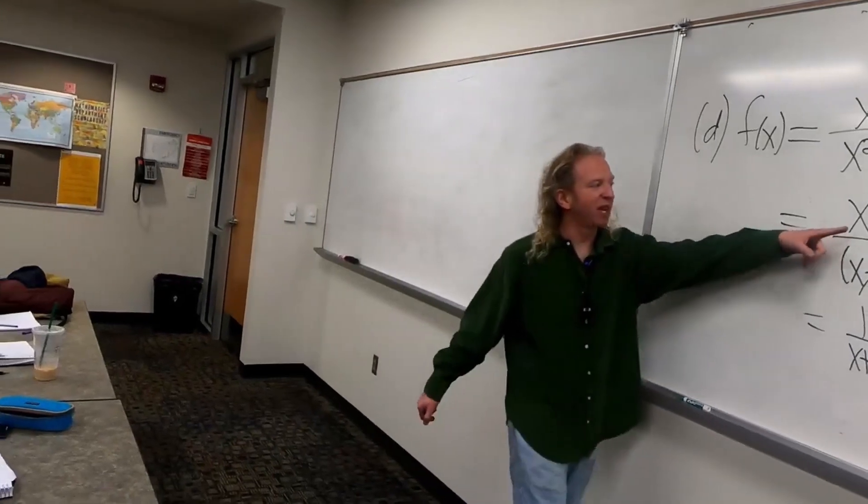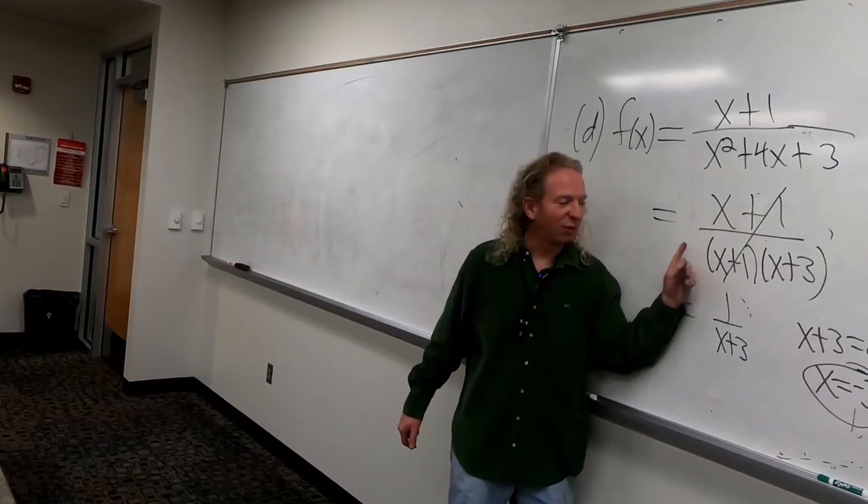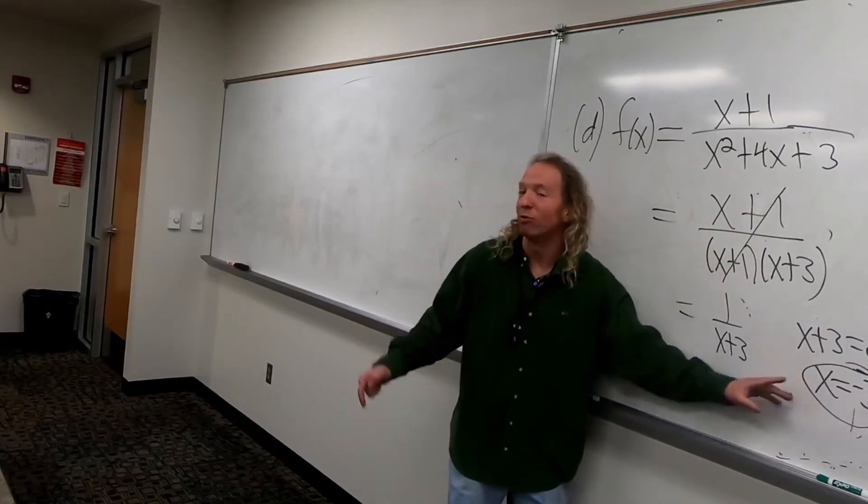By the way, what happens at negative 1? What do we have there? A hole. Is it removable or non-removable? Removable. Yeah, what about this one? Is it non-removable? Non-removable. Yeah, good.